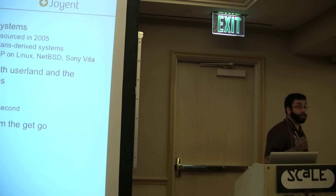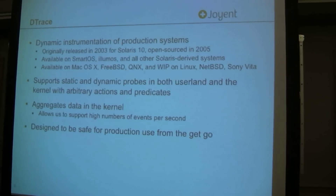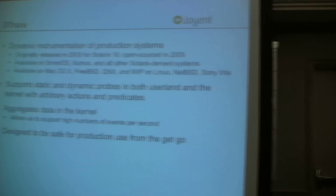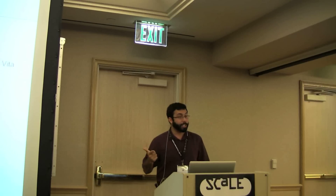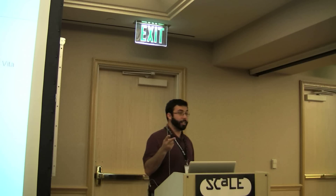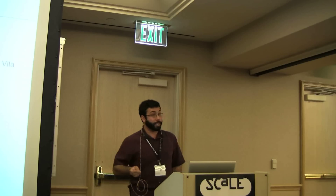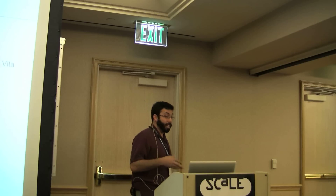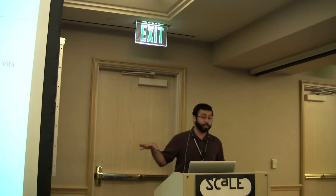So the last little bit is DTrace. DTrace is a system for dynamic instrumentation of production systems. DTrace was created by Brian Cantrell, Adam Leventhal, and Mike Shapiro. It originally came out in 2003 for Solaris 10, and it was the first thing that Sun open-sourced as part of Open Solaris in 2005. Currently, you can get DTrace on SmartOS, Illumos, and all other Solaris-derived systems, and it's also available on Mac OS X, FreeBSD, and QNX. There are also two ports to Linux — one done by Oracle and one done by others — a port to NetBSD, and even Sony is porting DTrace for their console development, so it's seen a lot of widespread use outside of the original Solaris community.